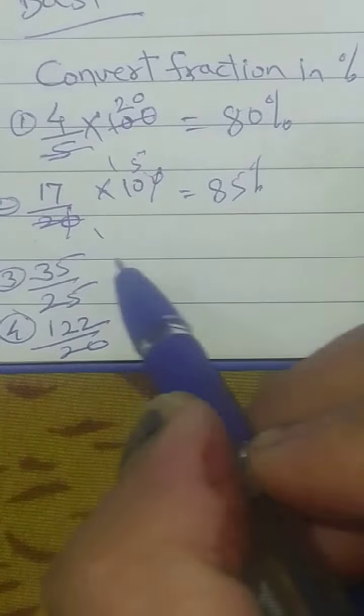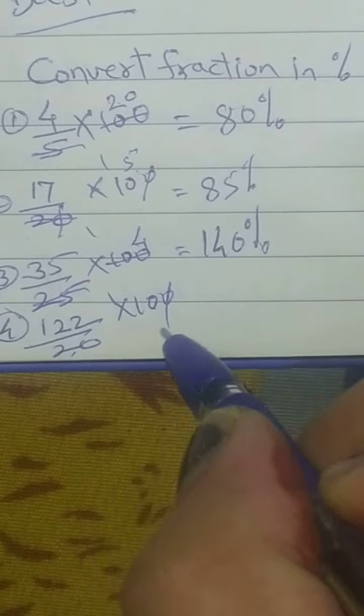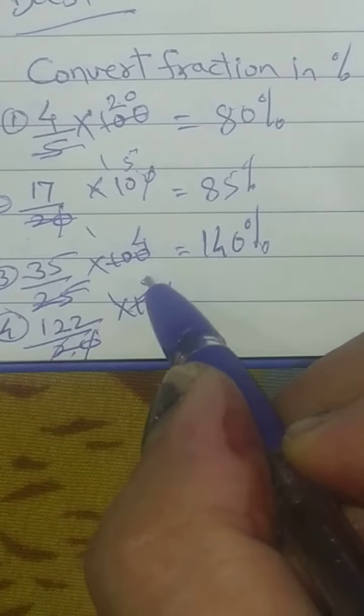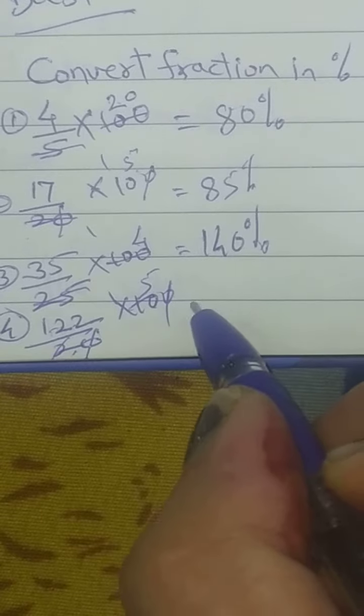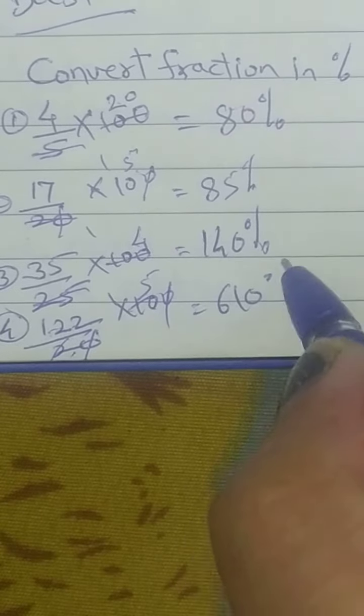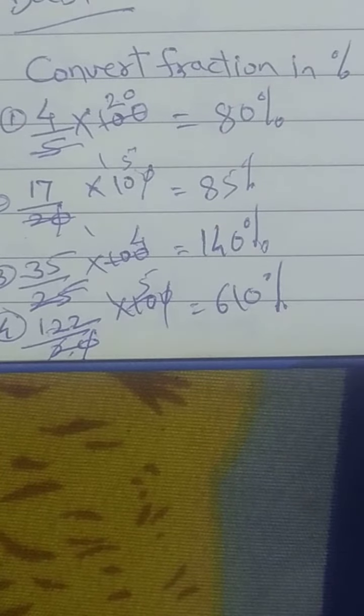Here will be 140%. Again 122 upon 20, multiply by 100, zero zero cancel.